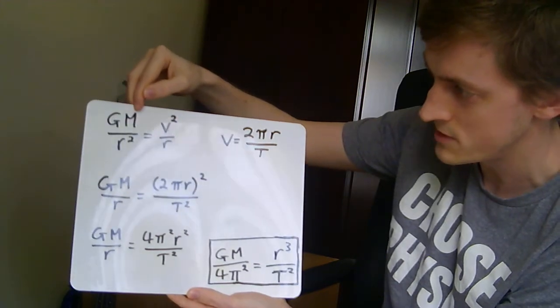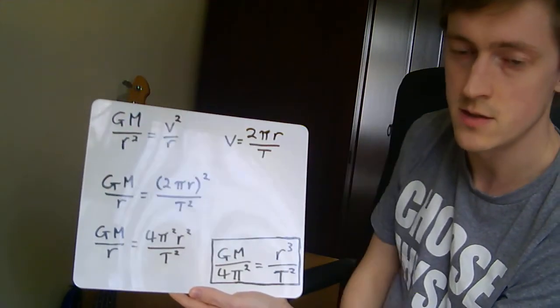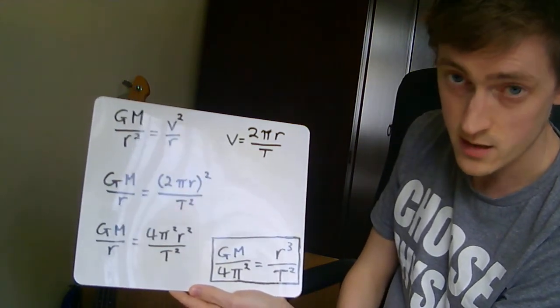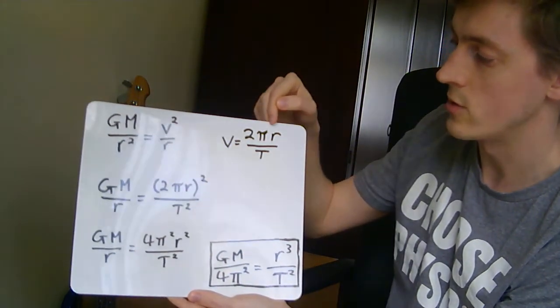M is the mass of the object that we're orbiting. R is the radius of the orbit. And V is the velocity, not the angular velocity, just the regular distance over time kind of velocity.